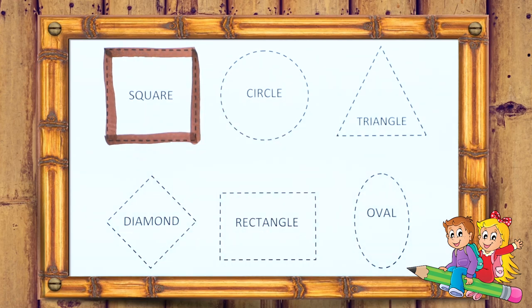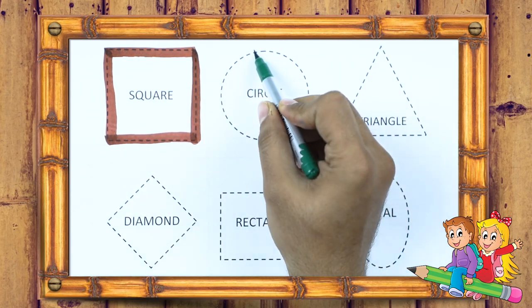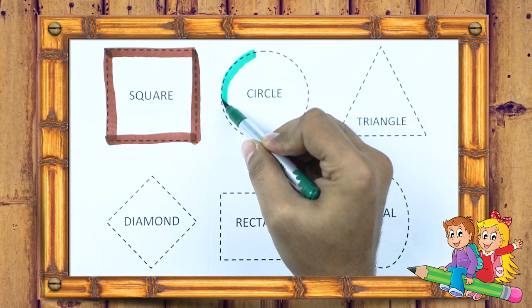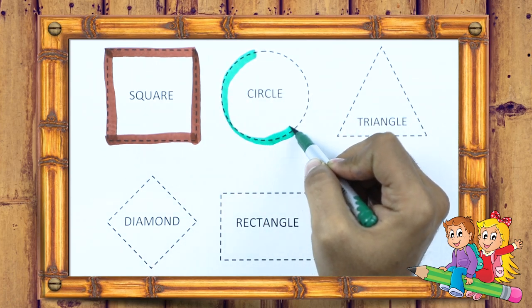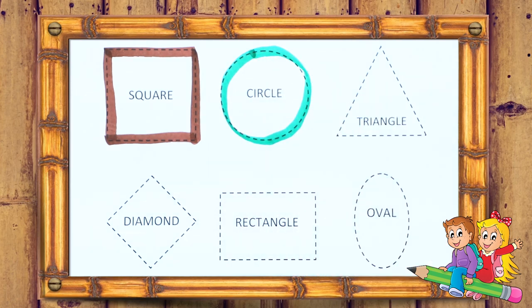It's a circle. Circle with green color. Round, circle.